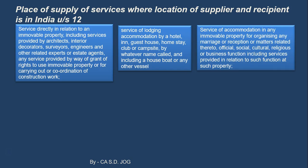The third case is services of accommodation in any immovable property for organizing a marriage, reception, or matters related thereto — official, social, cultural, religious, or business functions — including services provided in relation to such functions at such property. So a ceremony hall where a marriage, cultural, social, or official gathering takes place is covered, and catering or event management services provided for that particular event are also included.